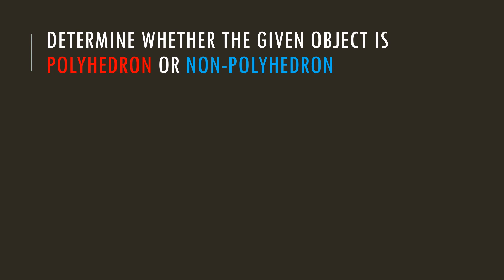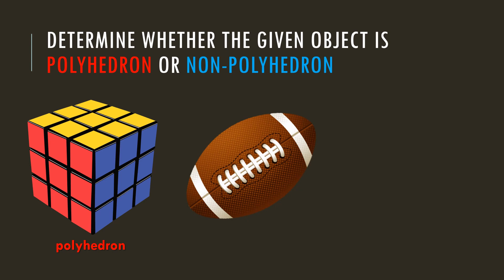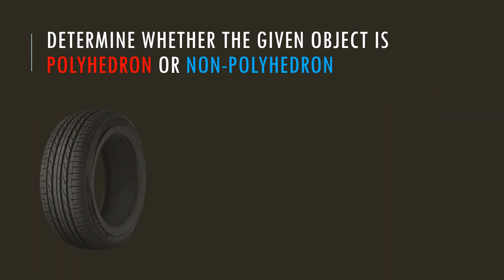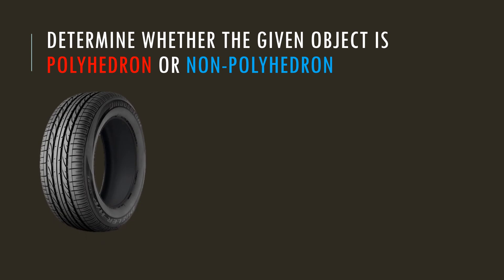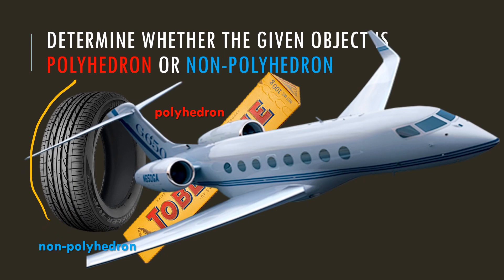Let's determine whether each object is a polyhedron or non-polyhedron. The cube is a polyhedron. A football is a non-polyhedron — it has a curved surface. A battery is a non-polyhedron. A tire is obviously a non-polyhedron — it's round and curved. A Toblerone box is a polyhedron — all its surfaces are flat. An airplane is a non-polyhedron.